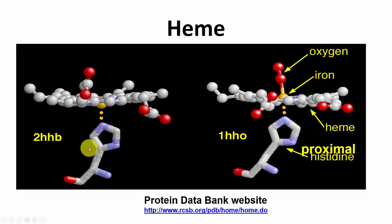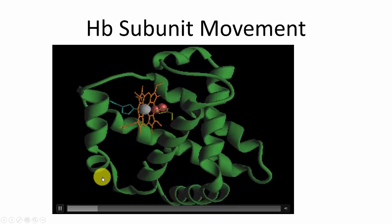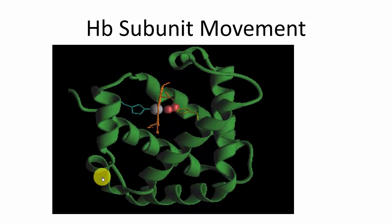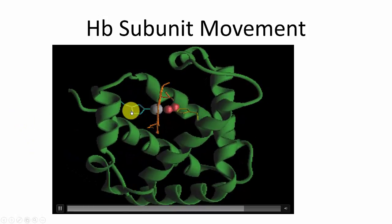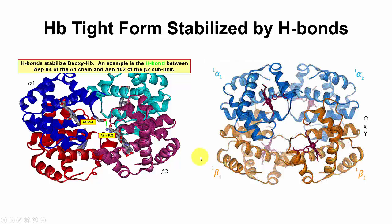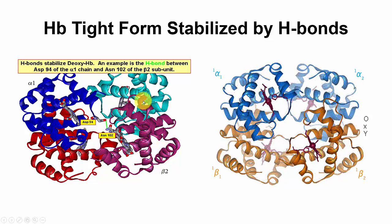The proximal histidine coordinates with the iron; when oxygen binds, the iron moves up slightly, pulling the proximal histidine and causing the hemoglobin to shift. A video illustrates this conformational movement as oxygen binds. Bonds stabilizing the deoxy form include hydrogen bonds between aspartate 94 and asparagine 102, as well as other hydrogen bonds and hydrophobic interactions that are disrupted upon oxygenation.